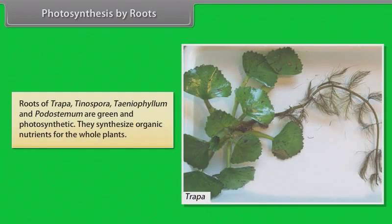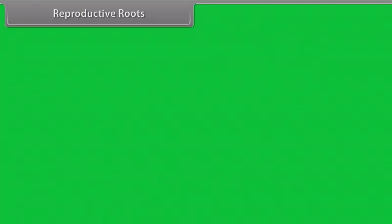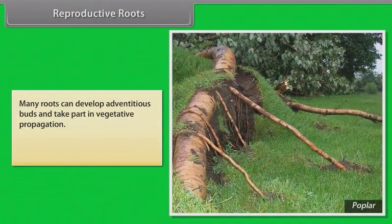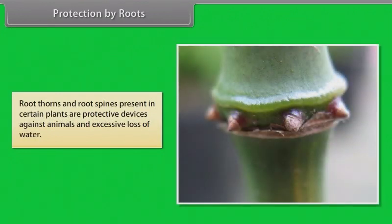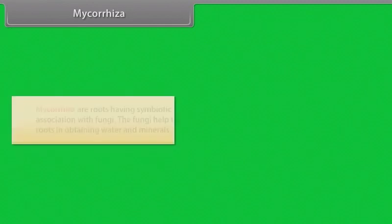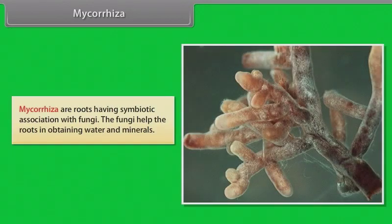Photosynthesis by roots — roots of Trapa, Tinospora, Taeniophyllum, and Podostemum are green and photosynthetic; they synthesize organic nutrients for the whole plant. Reproductive roots — many roots can develop adventitious buds and take part in vegetative propagation. Examples: Populus, Dalbergia, dahlia, sweet potato. Protection by roots — root thorns and root spines present in certain plants are protective devices against animals and excessive loss of water. Mycorrhiza — roots having symbiotic association with fungi; the fungi help roots in obtaining water and minerals.